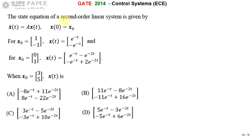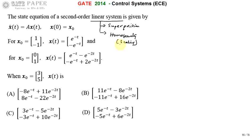Remember that this is given as a second order linear system. Every linear system satisfies two principles. The first is the superposition theorem, which says the overall response of any system with multiple input sources is going to be the sum of individual responses considering one input at a time, while all other inputs are set to zero.